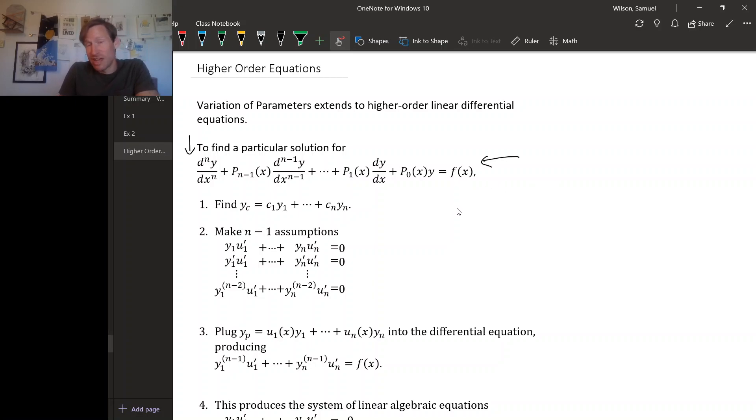The first thing you do, just like in the second order case, is find a fundamental set of solutions to the associated homogeneous equations. So these y sub 1 through y sub n are going to be known functions from now on, so we can do calculations with them. Since this is an order n equation, a fundamental set will have n solutions in it. That's why we have to go from y sub 1 all the way out to y sub n.